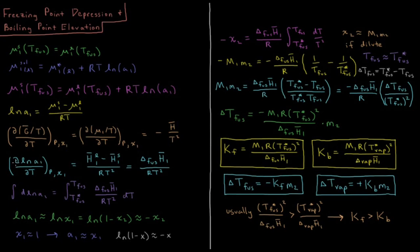The partial derivative of the natural log of the activity of the solvent with respect to temperature — coming from d(μ₁/T) — equals the molar enthalpy of the liquid of the solvent minus the molar enthalpy of the solid of the solvent, divided by RT squared. This difference is simply the enthalpy change of fusion for the solvent divided by RT squared.